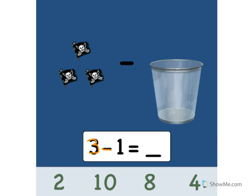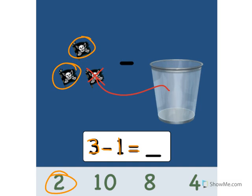3 minus 1 equals what? Let's take away 1. 1. Put 1 in the trash can. How many pirate flags does that leave us with? Let's count. 1, 2. Point to the number 2. Great. 3 minus 1 equals 2. Nice!